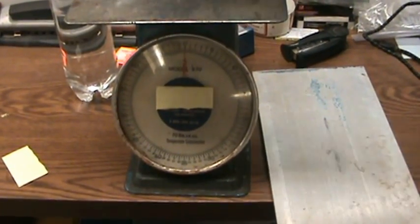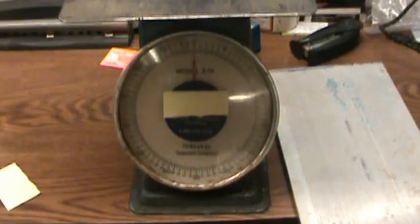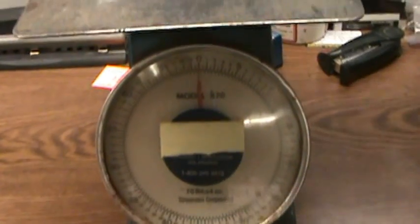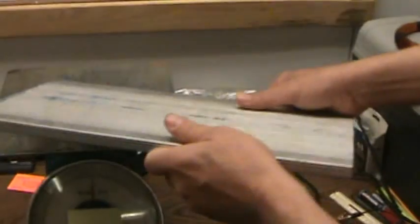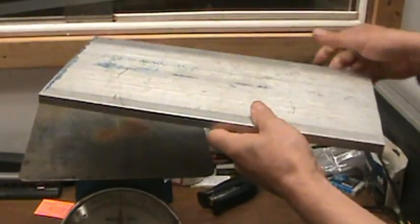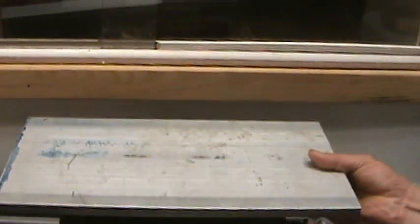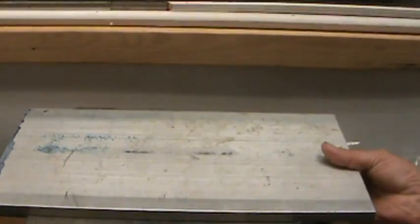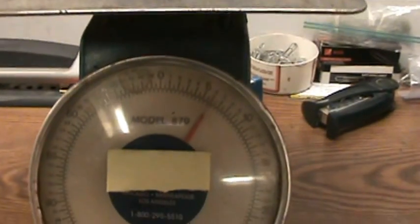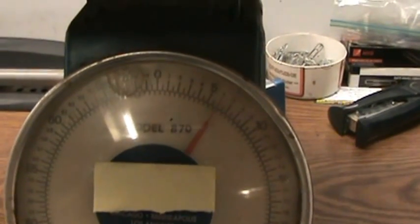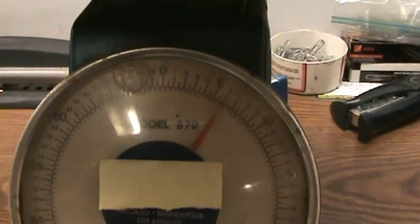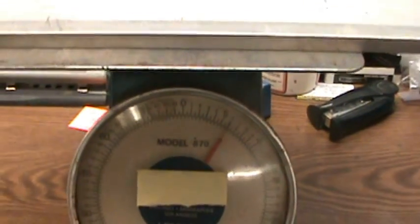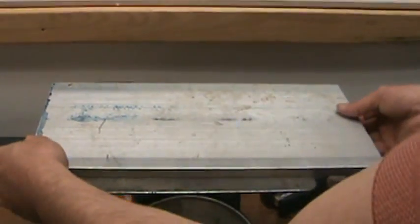This is a scale here, just a basic scale. I want to show you a couple things here. I've got an aluminum plate here. I want to show you the weight. If you can see, it's 6 pounds. Take it back off. Zero.